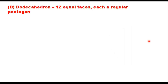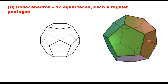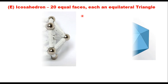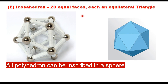A dodecahedron has 12 equal faces, each face being a regular pentagon. A icosahedron has 20 equal faces, each being an equilateral triangle. As the number of faces increases, these solids take the shape of a sphere, and therefore all these polyhedra can be inscribed in a sphere.